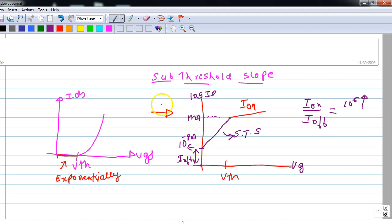We want this Ion by Ioff to be a very large value. And this sub-threshold slope will decide where this is going to cut the y-axis. For example, we know that with decreasing technology, our Vth is also decreasing. But with technology, the sub-threshold slope doesn't change.